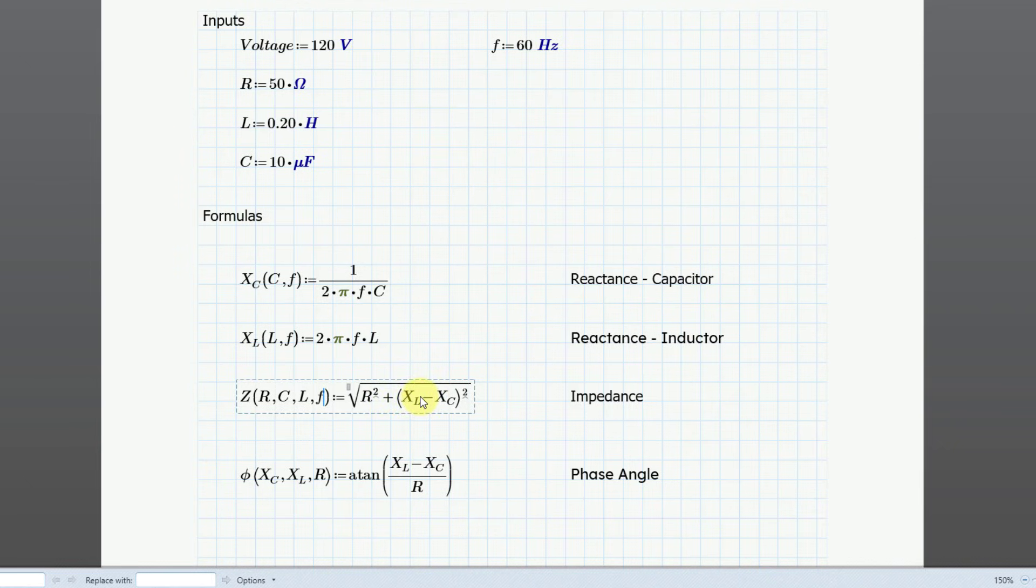And now let's change this to a function. I'll hit the open parentheses and then pass the values that will go to this function, which will be L and F. And let's do the same thing for the reactance for the capacitor. Let me do open parentheses. And this one will get C and F. And let me click outside. And there we have our updated formula.